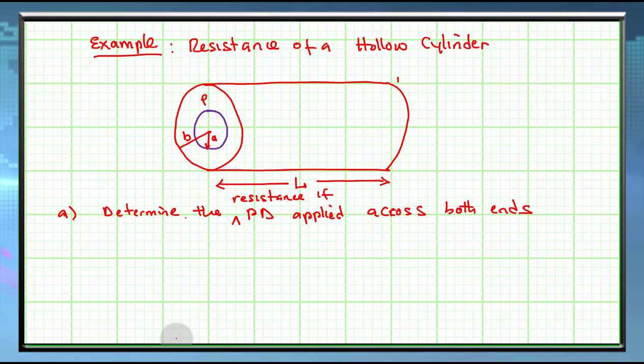Now when the potential difference is applied across both ends, this is a tricky question. The current will flow parallel to the axis, like this, throughout the material.